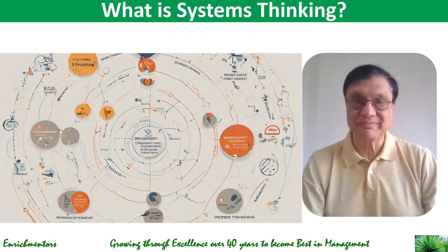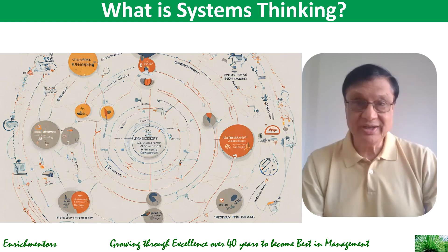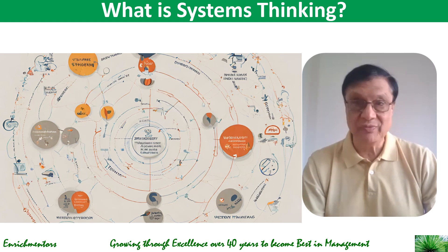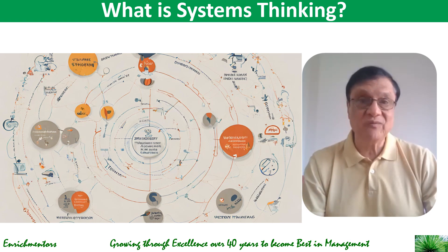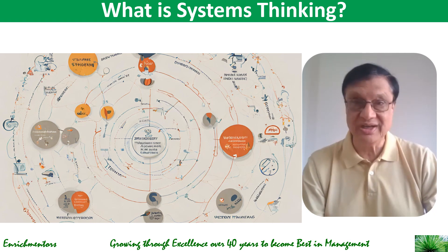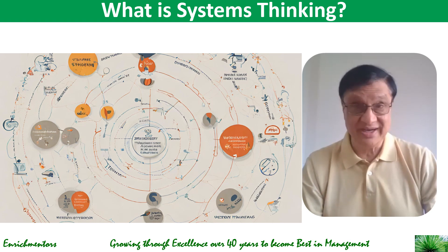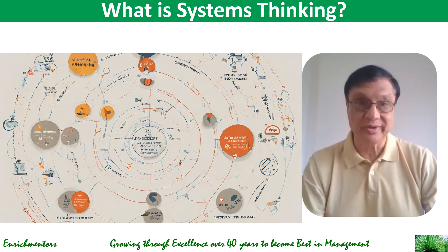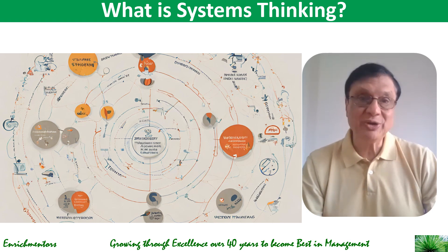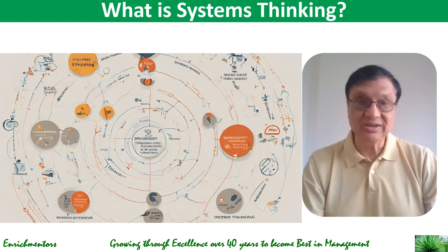Systems thinking views systems as interconnected wholes — big complex things that have many parts and they are interconnected. Each part influences the behavior of the whole. They are dynamic. Systems thinking emphasizes understanding the relationship between the parts of the system, the various components, rather than analyzing them in isolation. This is holistic thinking — it's about connecting the dots and analyzing all of them in totality rather than in isolation.